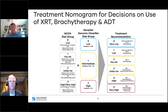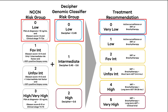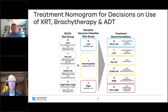I came up with a decision tree based on those risk categorizations. Patients who have low-risk disease — NCCN low risk and Decipher low risk — they're very low risk. Those patients should best be managed by active surveillance. But if they were unwilling to consider surveillance, we would offer them radiation therapy in the form of either external beam treatment or brachytherapy monotherapy.